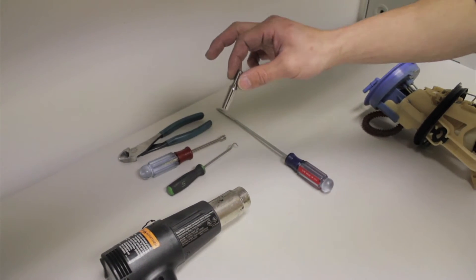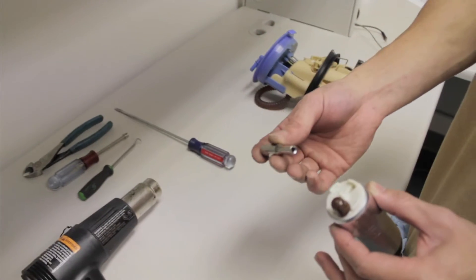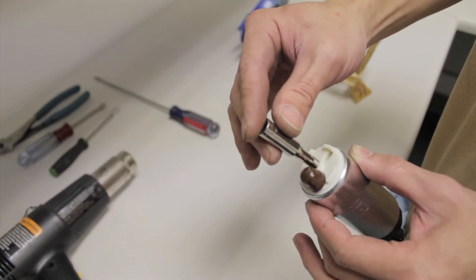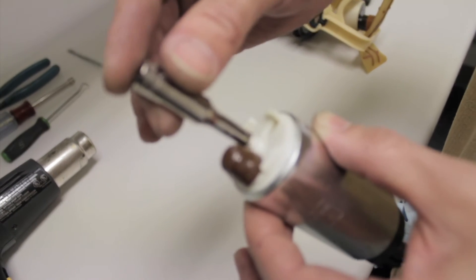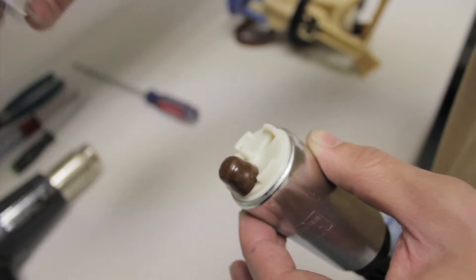Now the small socket, the size that you want to choose, it does not matter if it's metric or standard. Basically you want the socket to fit over this shaft here very snugly, and I'll show you what that's about a little bit later.